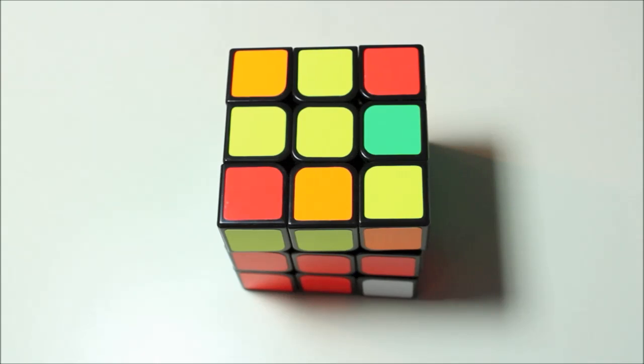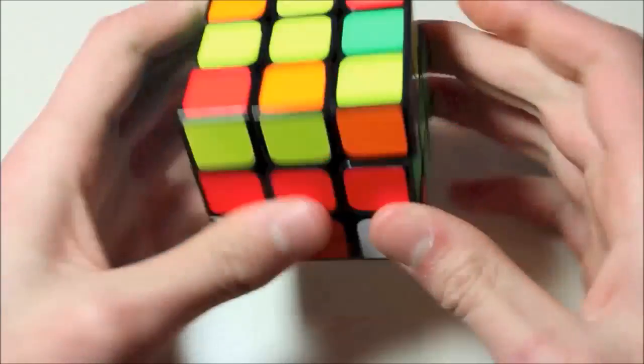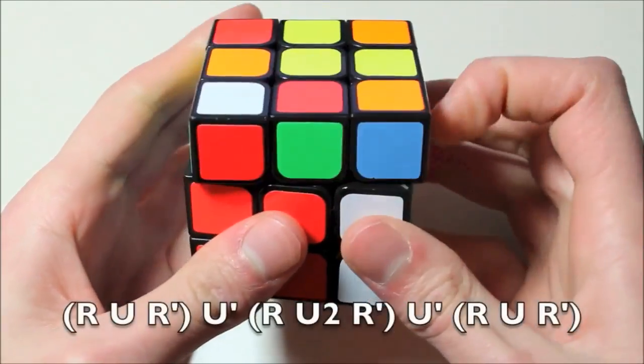Cases in which neither of the pieces that make up a pair are in the top layer are slightly different. For these cases, you must first execute one of the triggers to move both pieces into the top layer, then you must solve the resulting case as you normally would. For instance, here I would do R U R' to take these pieces out of the bottom middle layers where they were.